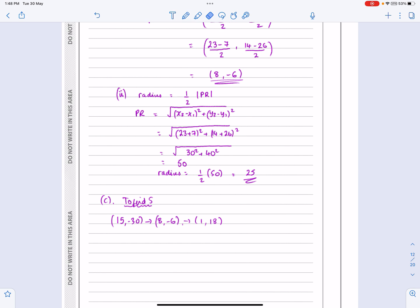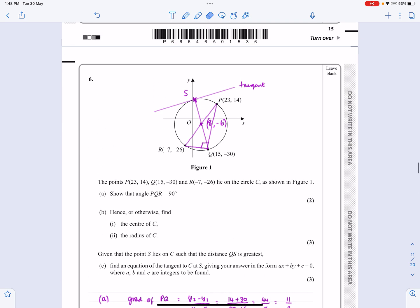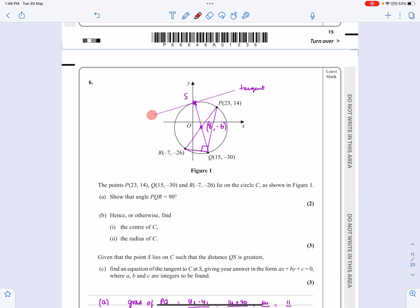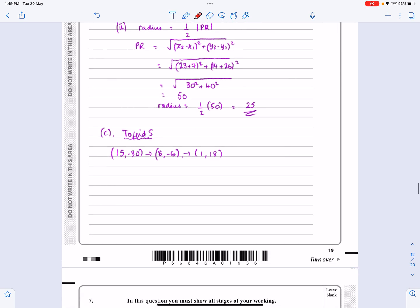So I've got the coordinate. I now need to work out the gradient of the tangent. Well, what I can do to start off with, going back and looking at this, is I can work out what the gradient of SQ is. And then if I've got the gradient of SQ, the gradient of this tangent, because it's perpendicular, will just be minus 1 over it. That's a pretty standard thing to have to be able to do.